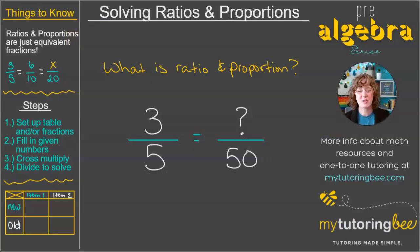Let's talk about first, what is a ratio and proportion? If you know anything about equivalent fractions, then you already know about ratios and proportions. That is really all that we are dealing with here. So if we have a fraction like 3/5, and we want to know what that is equivalent to over 50, then we can use ratio and proportions.